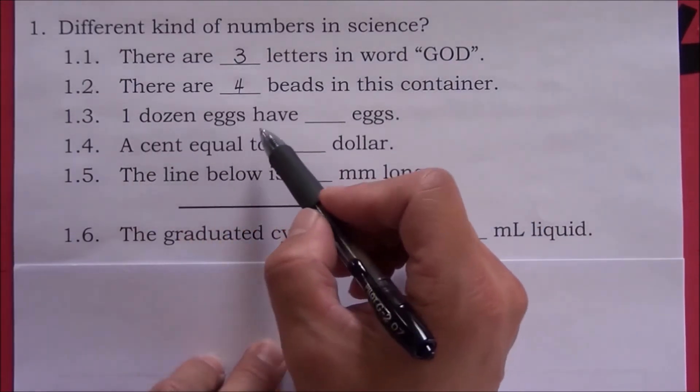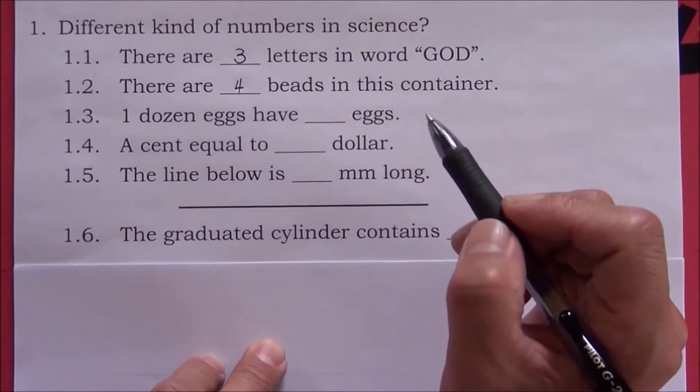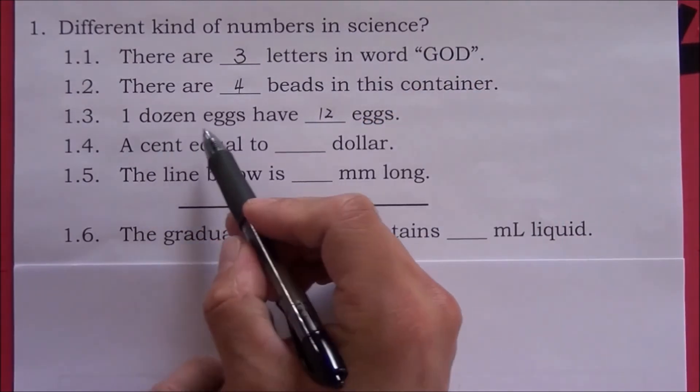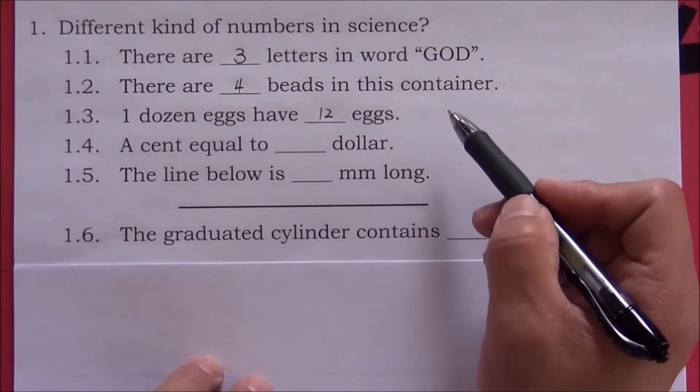Number three: A dozen eggs have how many eggs? A dozen eggs have 12 eggs.